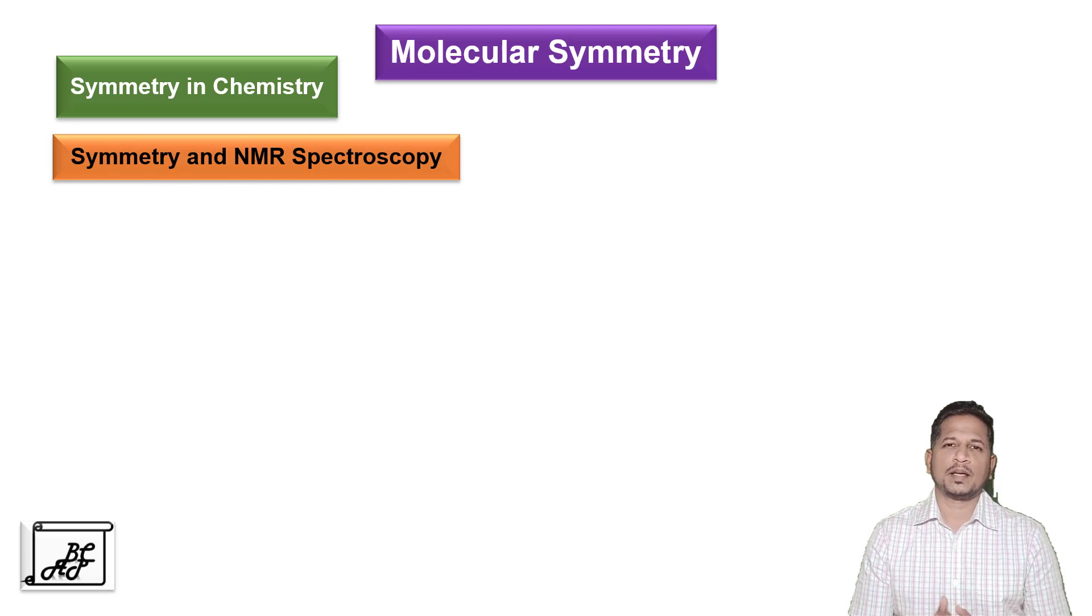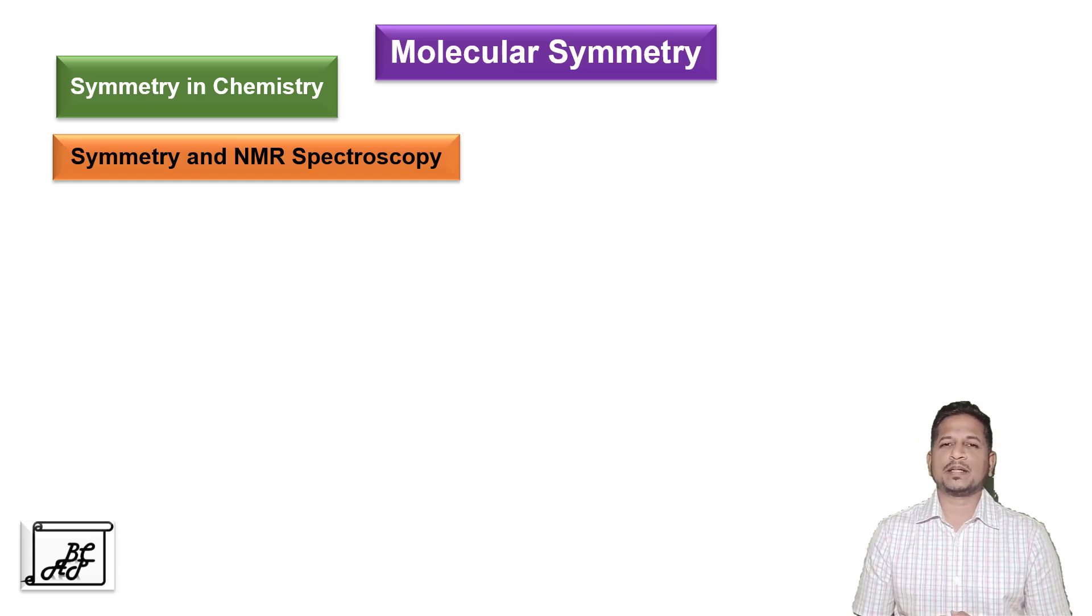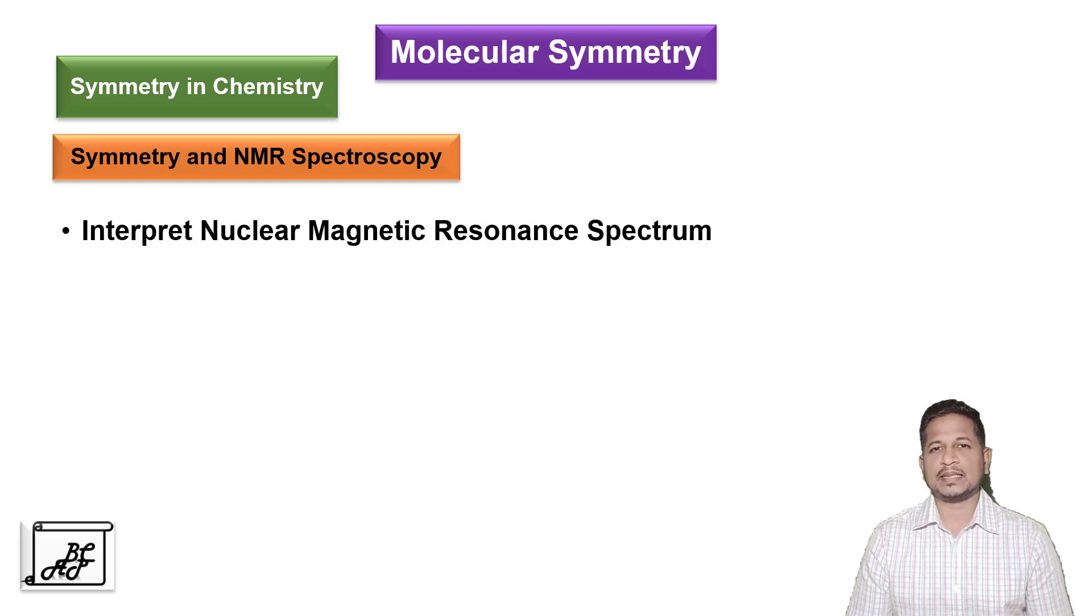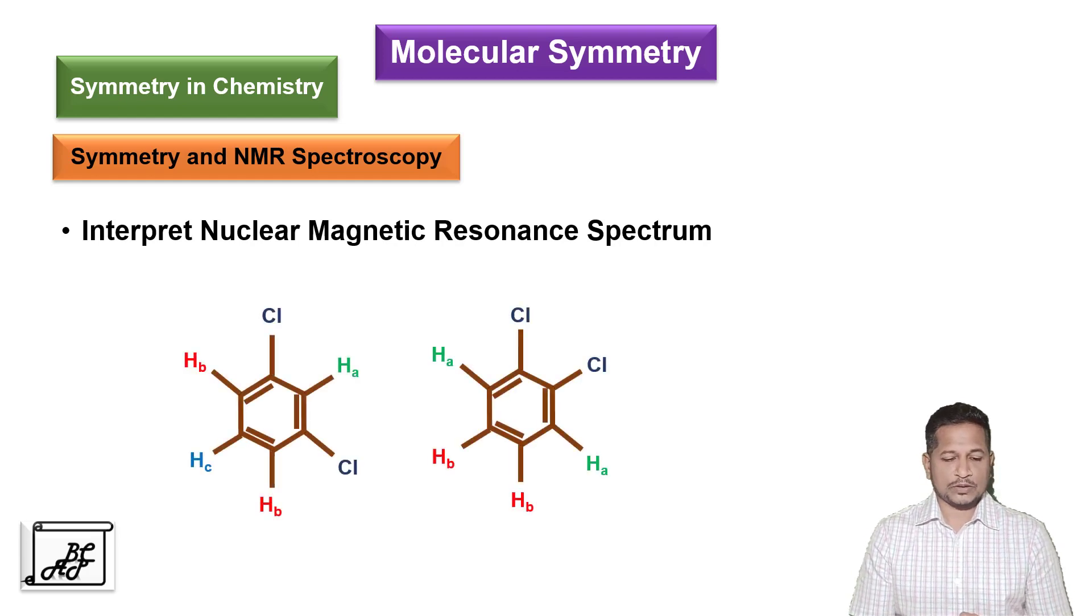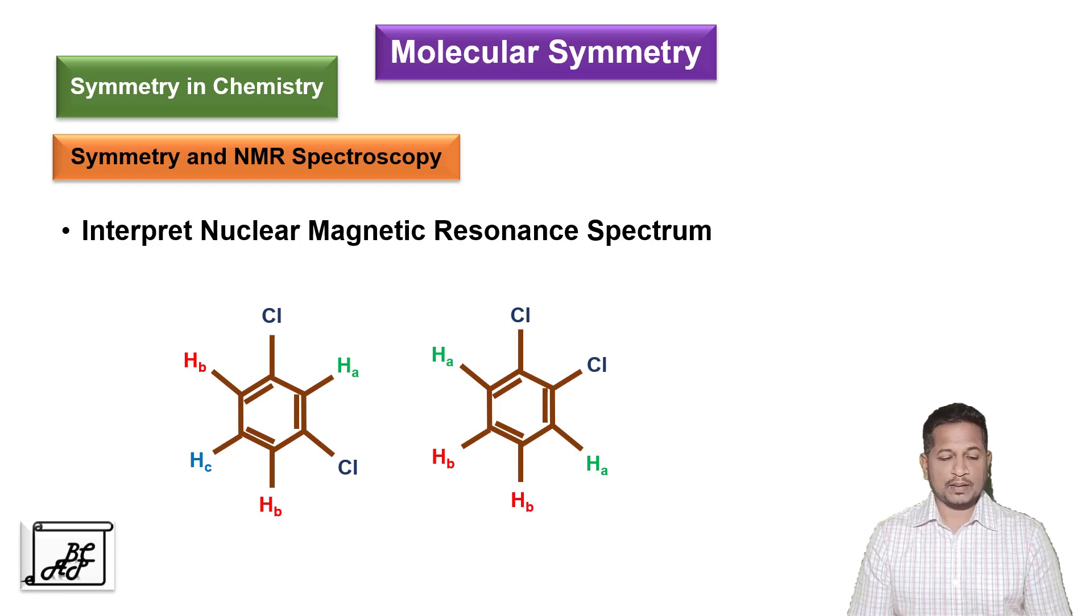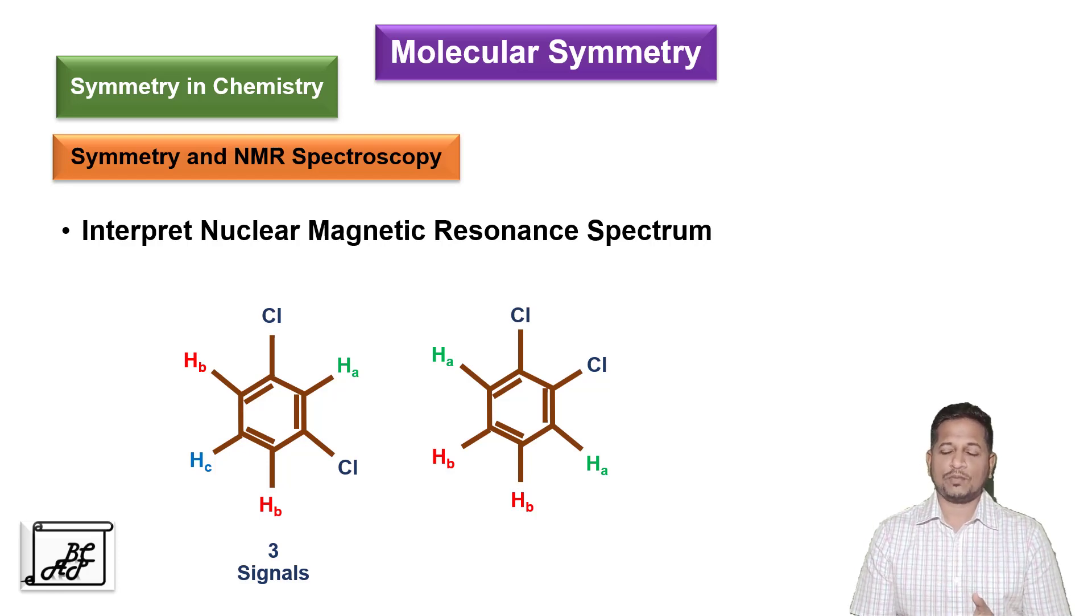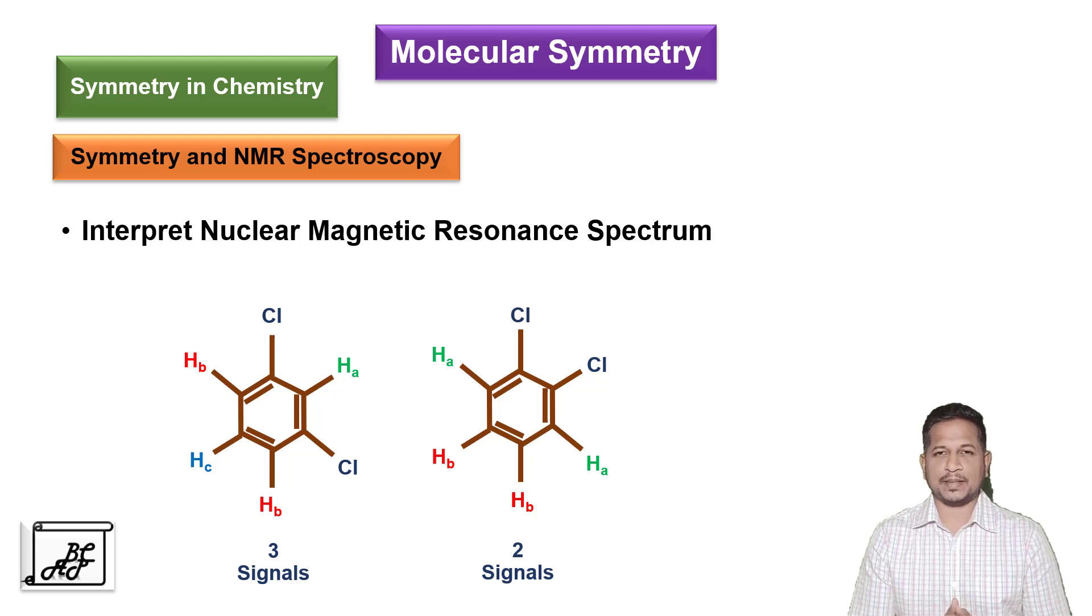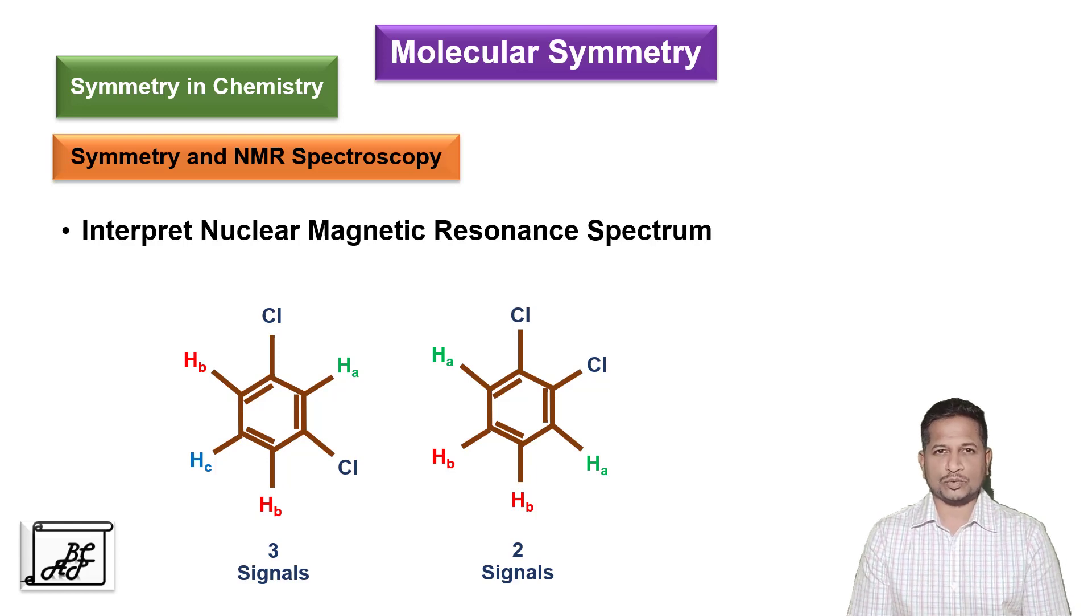Let us understand the application of molecular symmetry in nuclear magnetic resonance spectroscopy. Molecular symmetry helps to interpret the NMR spectrum. Here we can consider two examples of dichlorobenzene. The first one is 1,3-dichlorobenzene where there are three types of protons and therefore we receive three signals in NMR spectrum. Whereas in case of 1,2-dichlorobenzene, there are two types of protons which are symmetric. Therefore, we receive two signals in NMR spectrum.